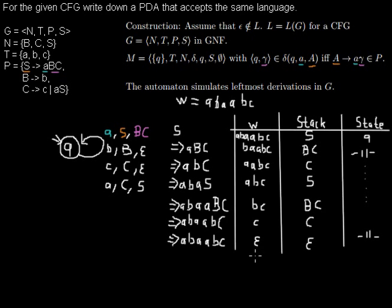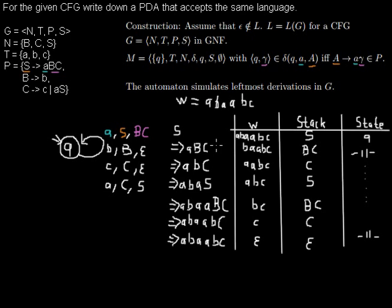The word is accepted because we read the whole input string and the stack is empty. If you compare the leftmost derivation with the work of the automaton, you see that the non-terminals left in the derivation are always the same as those left on the stack. The automaton always processes the leftmost symbol next, which is the one on top of the stack — confirming that the automaton indeed simulates the leftmost derivation done by the grammar.